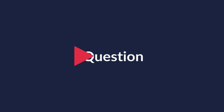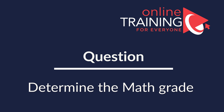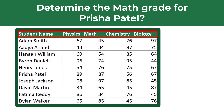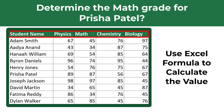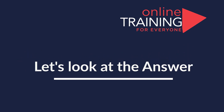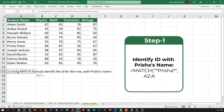Here's a very interesting problem where you need to determine a value using INDEX and MATCH Excel formulas. Specifically, you need to find the math grade for Prisha Patel. You're presented with a range of values including student names and grades in physics, math, chemistry, and biology. We can solve this in two steps. In step one, use the MATCH formula to identify the row ID for Prisha's name.